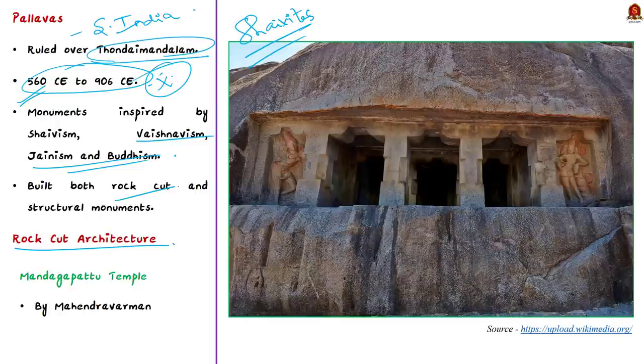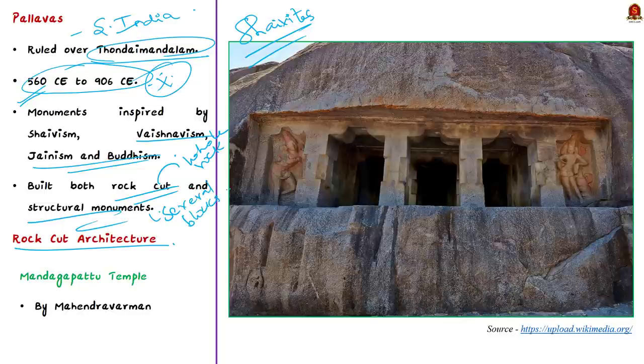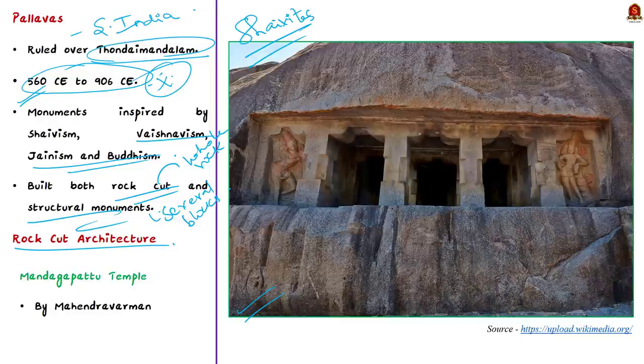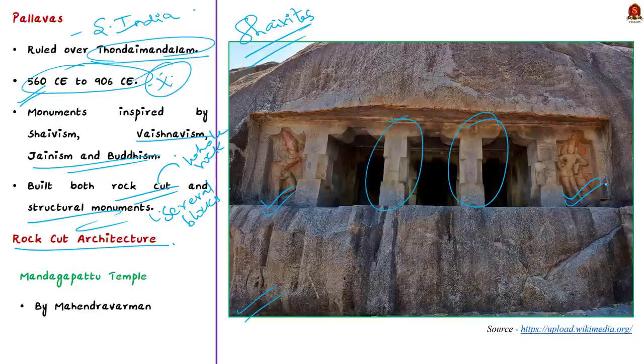What is the difference between rock cut and structural temples? In rock cut temples, the temple is carved out of a whole rock block, while structural temples are built using several blocks of rocks. Look at this image. This is the famous Mandagapattu temple, built by Pallava king Mahendravarman. He was a pioneer in rock cut architecture. The Mandagapattu temple was the first rock cut temple built by him. If you observe closely, the rock cut cave structure has two pillars in the front. On either side of the entrance, you can see two Dwarapalas who are gatekeepers.